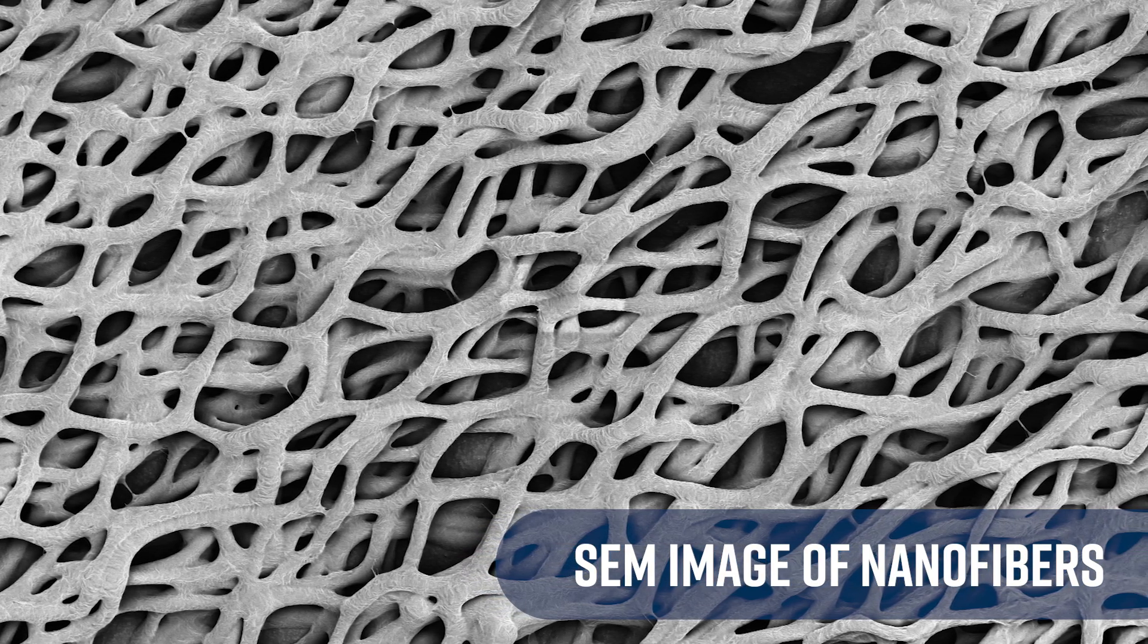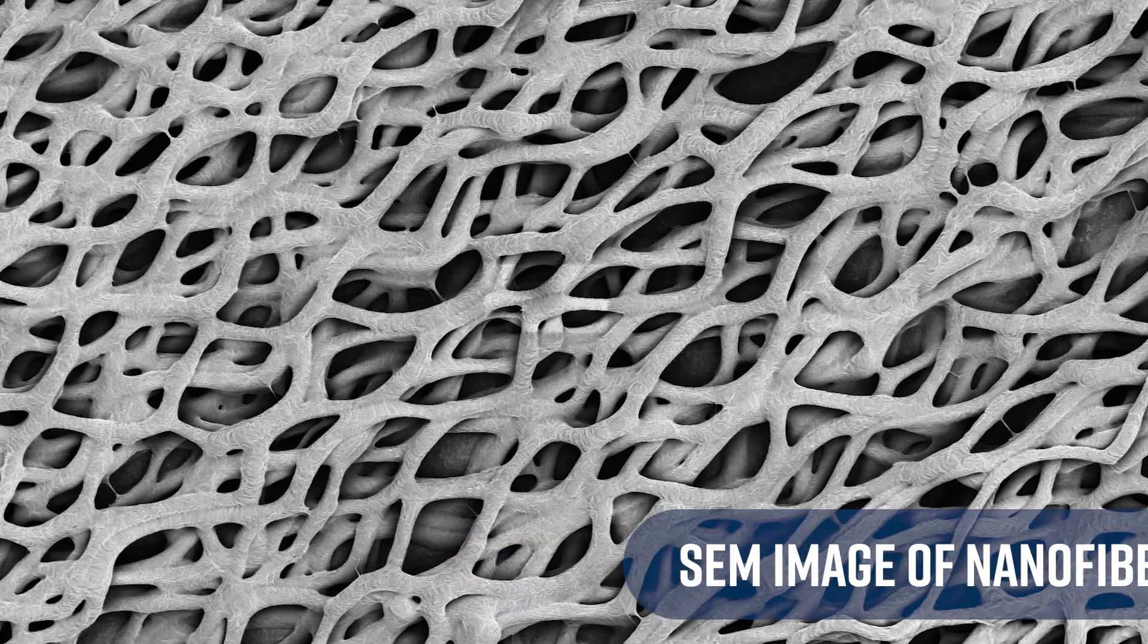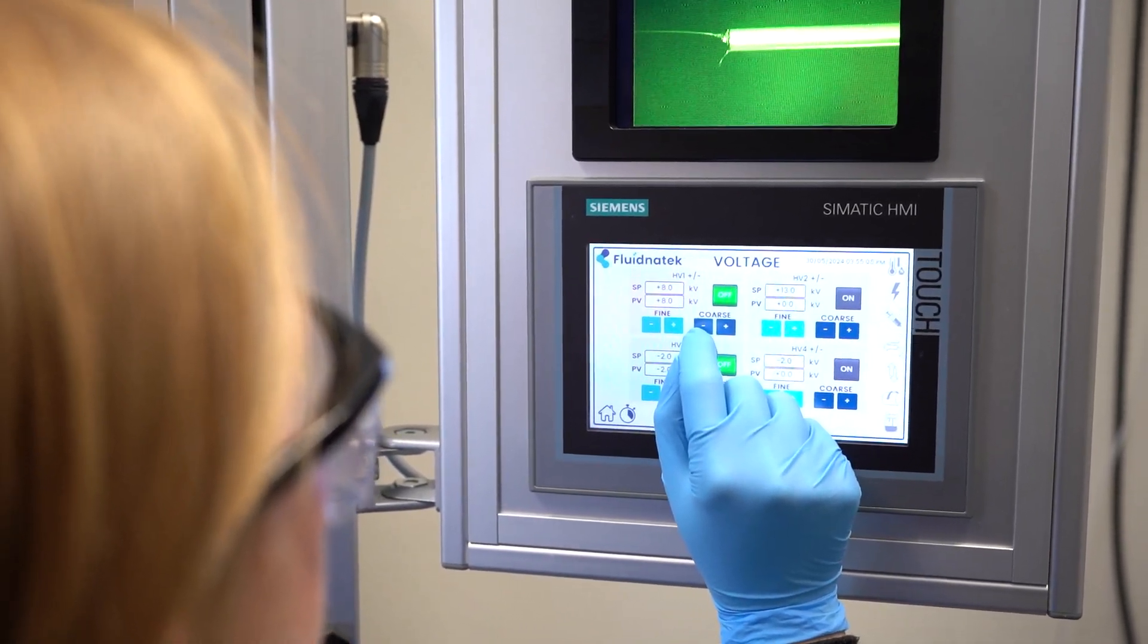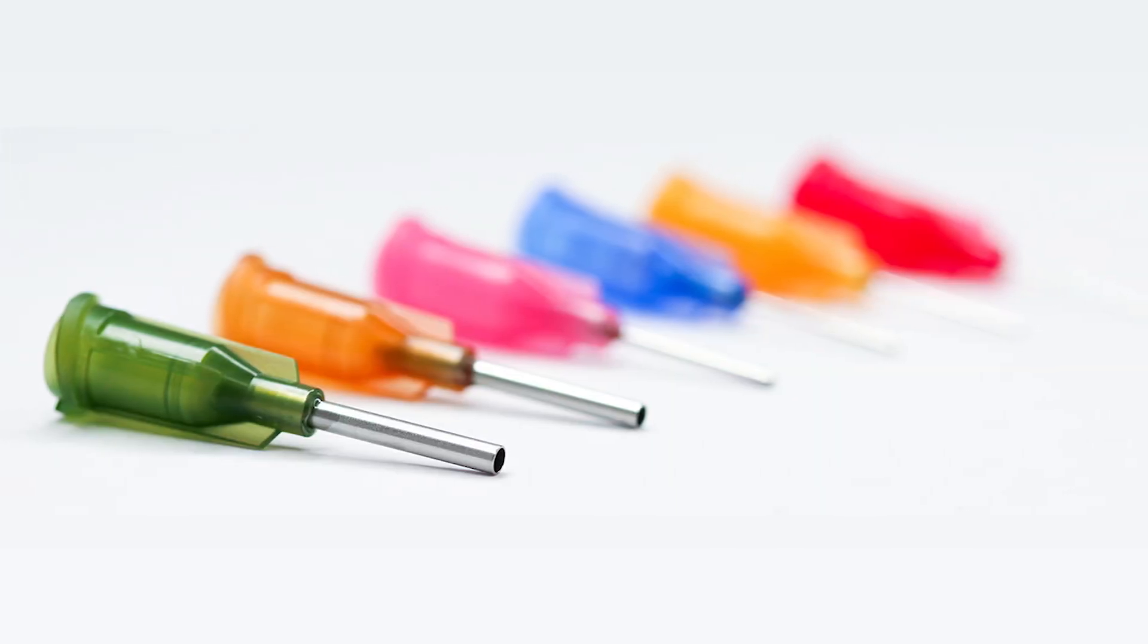Scientists and engineers tinker with various parameters like voltage, polymer solution properties, and needle size to control the formation and stability of the Taylor cone. This in turn lets them intentionally alter their process to produce fibers with specific characteristics.